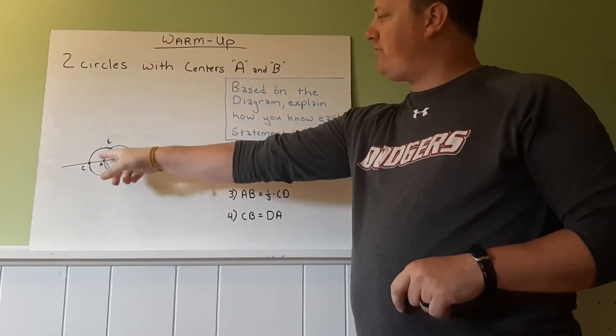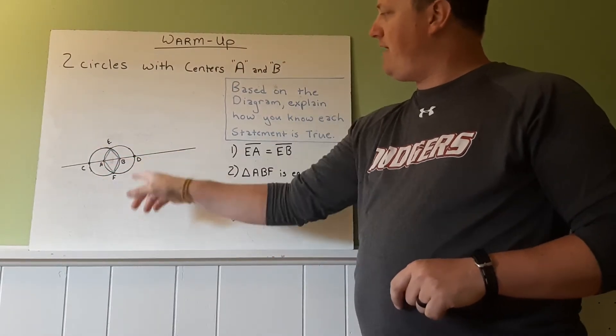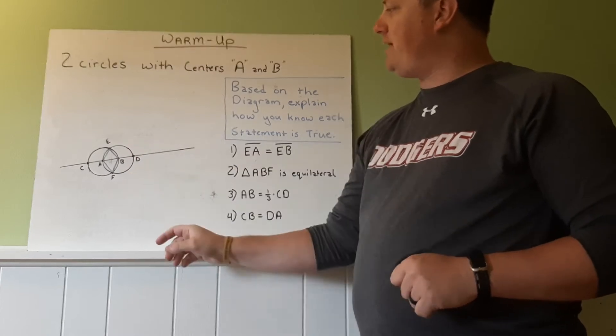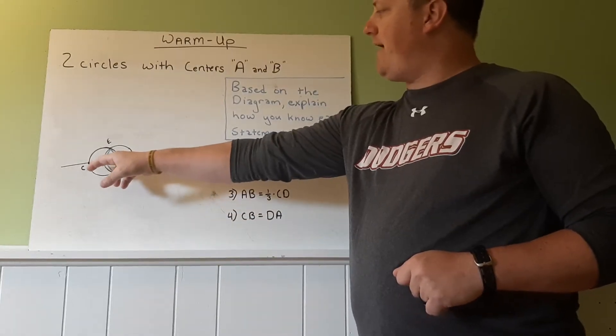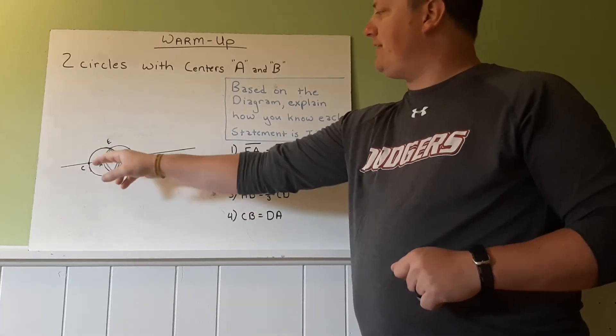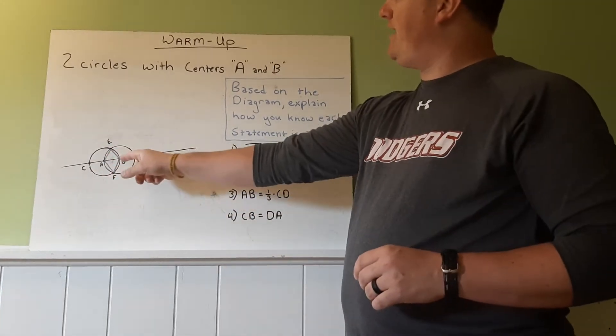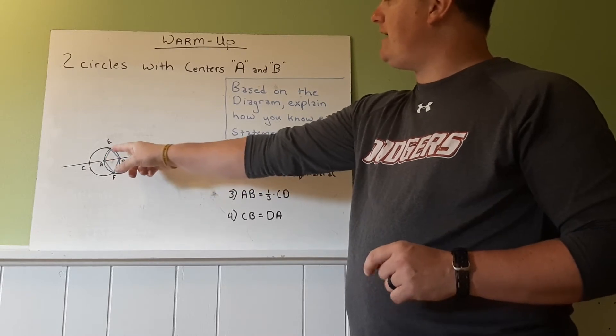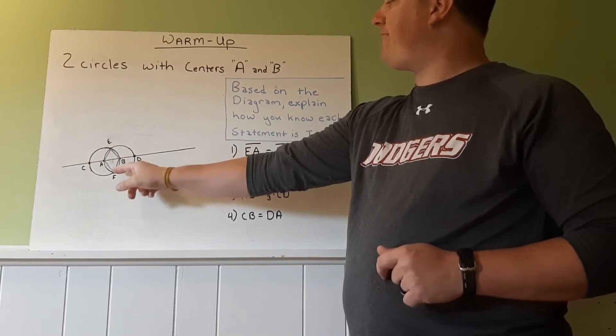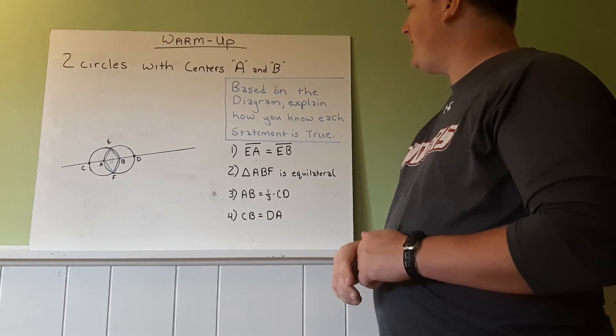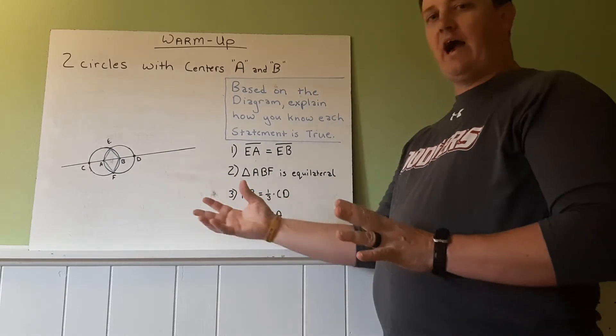If you notice, we have the circle over here with center A, circle on the right with center B. And then we have C and D on the outsides and E and F are where they intersect or cross. And then we have the connection between A and E, E and B, B and F, F and A right there.